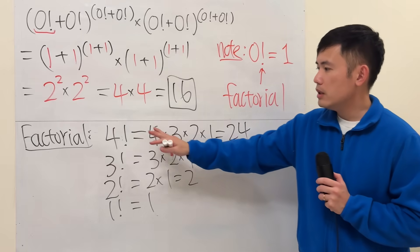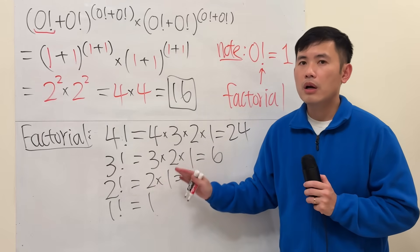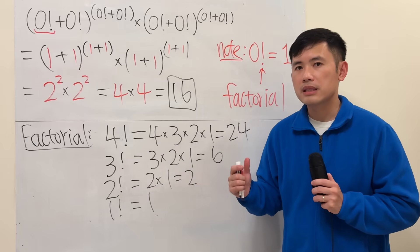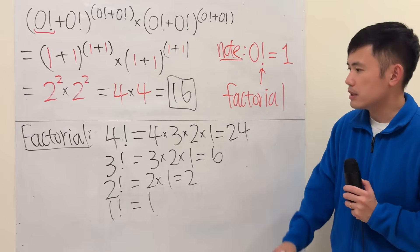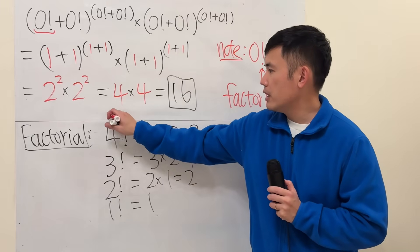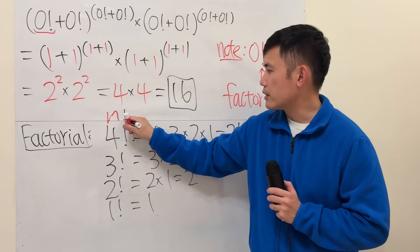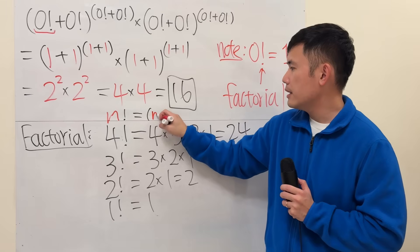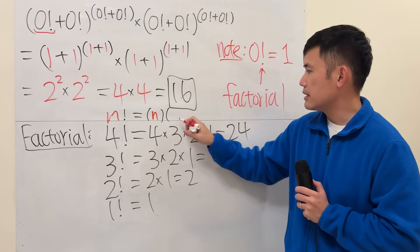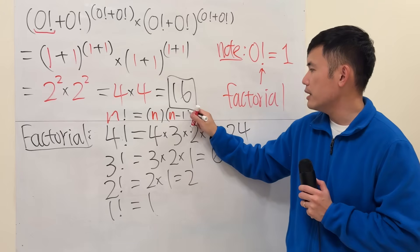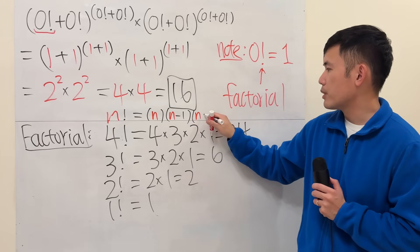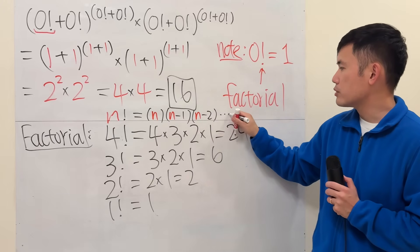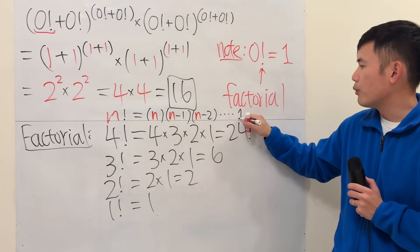Notice this definition only works when we have positive whole numbers. In detail, if you have some number n factorial, this means you start with n, multiply by n minus 1, then multiply by n minus 2, and so on up to 1. You stop right here.